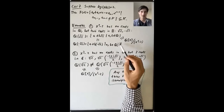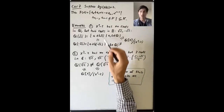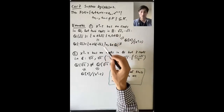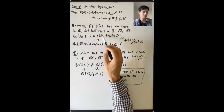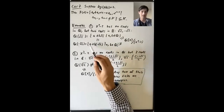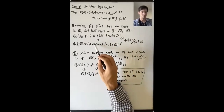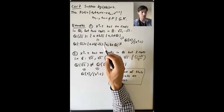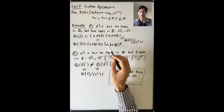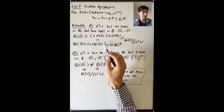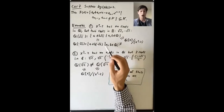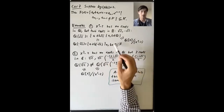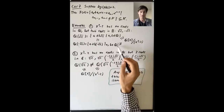That's not such an interesting result, because these sets are clearly equal to each other. If you have a plus b√2, that's the same as a plus negative b times negative √2. So these two subfields of ℝ are obviously equal to each other, and it's not surprising that they're both isomorphic to the same field.